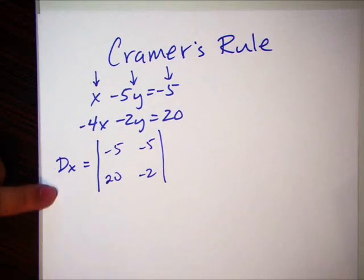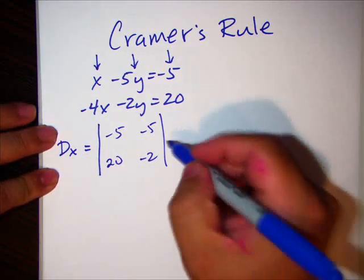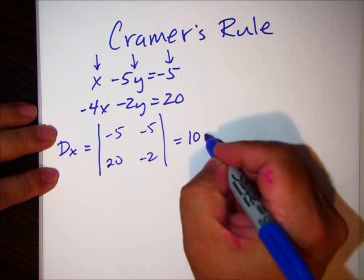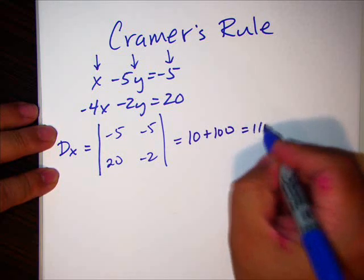Now, this will make more sense when you see the other determinants. So, here, this is what? Negative, or positive 10 plus 100. So, that's 110.